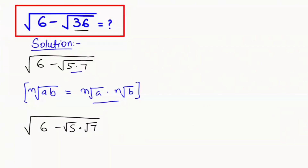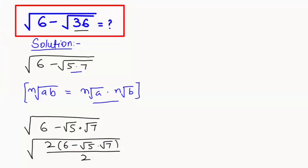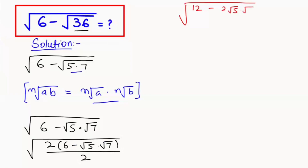Next step, I'm going to add here: 2 times 6 minus root of 5 times root of 7, over 2. So if I cancel this out, I will get the same amount of equation. Now I'm going to multiply this 2 with the whole bracket, so it will turn to 2 times 6 gives us 12, minus 2 root of 5 times root of 7, over 2.